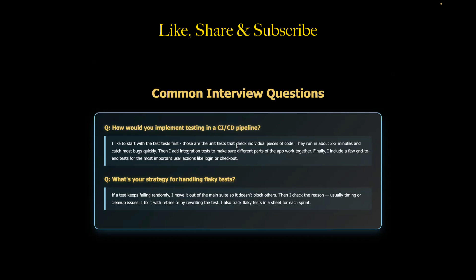Next question: what's your strategy for handling flaky test cases? Flaky tests are really pipeline killers. My first approach is to move flaky tests to a separate suite so they don't block deployment — since a failed test case stops the CI/CD pipeline. Second, I add retry logic. Third, I improve test isolation. Fourth, I use test impact analysis to run only the relevant tests. Specifically: if a test keeps failing randomly, I move it out of the main suite so it does not block others, then I investigate the reason — usually a timing or cleanup issue — fix it with a retry, and track flaky test cases in a sheet each sprint. Both specific and shows real experience.